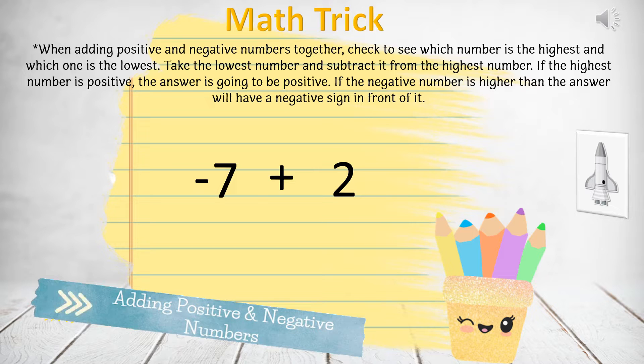When adding positive and negative numbers together, check to see which number is the highest and which one is the lowest. Take the lowest number and subtract it from the highest number. If the highest number is positive, the answer is going to be positive. If the negative number is higher, then the answer will be negative.